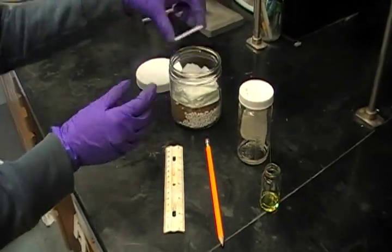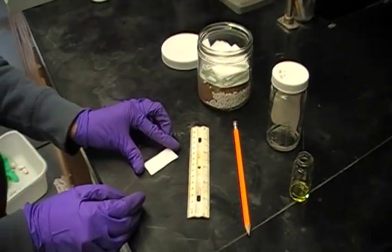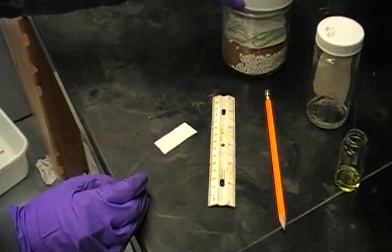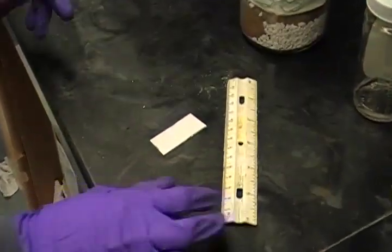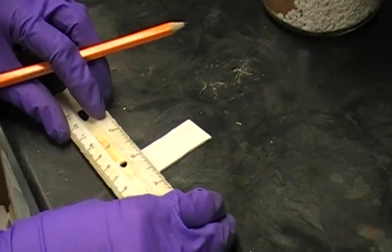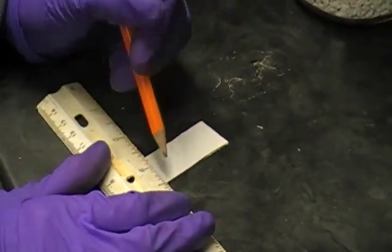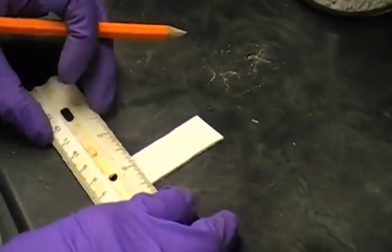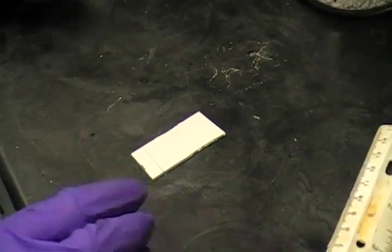To start, we take a clean TLC plate and very carefully draw a line on the bottom of the plate with a pencil, followed by a little tick to know where to spot our compounds.